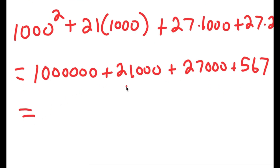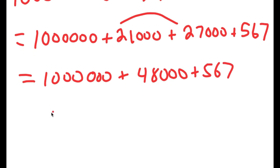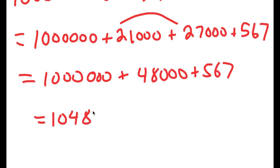Now I'm going to add all these up. 21,000 plus 27,000 is 48,000, plus 567 gives 48,567. Adding 1,000,000 gives a final answer of 1,048,567.